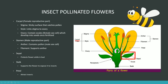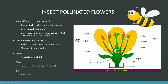The sepal protects the flower in a bud — it's a tough little protective structure. You've got the petals, which are exclusively in insect pollinated flowers and act to attract insects. And the stalk supports the flower.